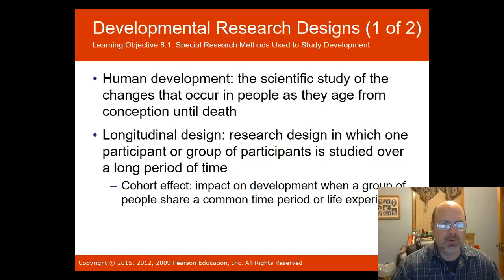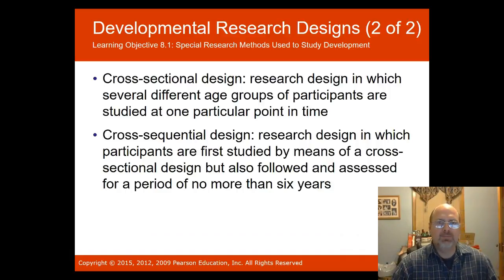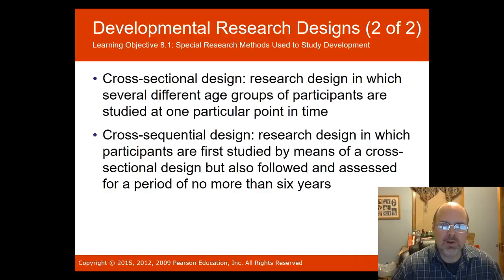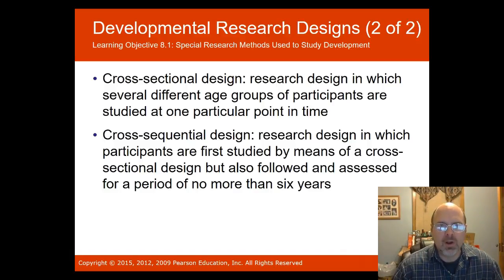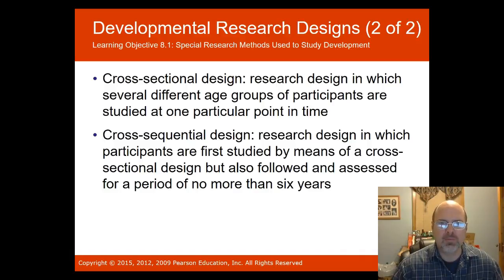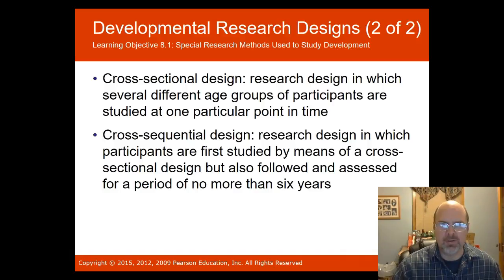Basically, if you're studying people who grew up at a similar time period, they have similar experiences. To overcome the cohort effect, we have cross-sectional design, where several different age groups of participants are studied at one particular point in time. Cross-sequential design combines both: participants are first studied by means of a cross-sectional design but also followed and assessed over a period of no more than six years.